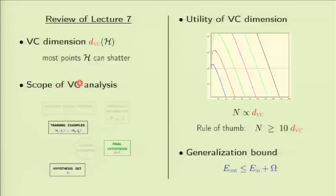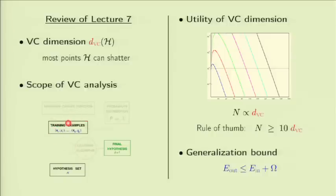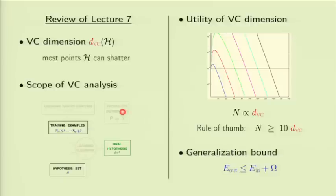One of the important aspects of the VC analysis is the scope. The VC inequality and the generalization bound describe the generalization ability of the final hypothesis you are going to pick, in terms of the VC dimension of the hypothesis set, making a statement that is true for all but delta of the data sets you might get. The VC bound is valid for any learning algorithm, any input distribution, and any target function you may be able to learn.